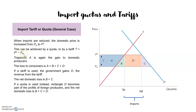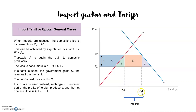So the new price after the tariff will be P star. And at this price, the quantity supplied increases compared to the situation where the market was completely open — the new QS is higher. And what happened to the quantity demanded? At this higher price, the quantity demanded decreases compared to when the price was Pw — the new quantity demanded is lower. So the imports decrease, because the price is set at a greater level. The new imports will again be the difference between the domestic quantity demanded and the domestic quantity supplied at this price.